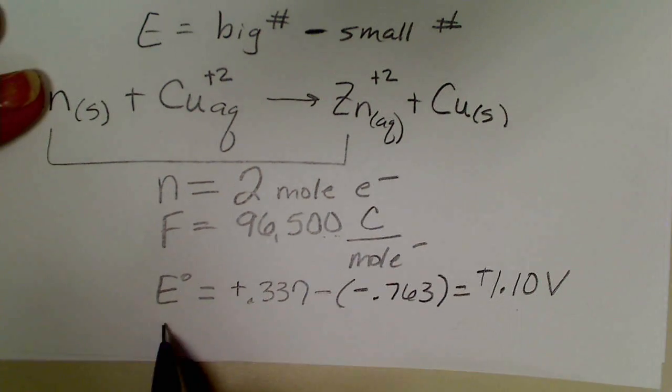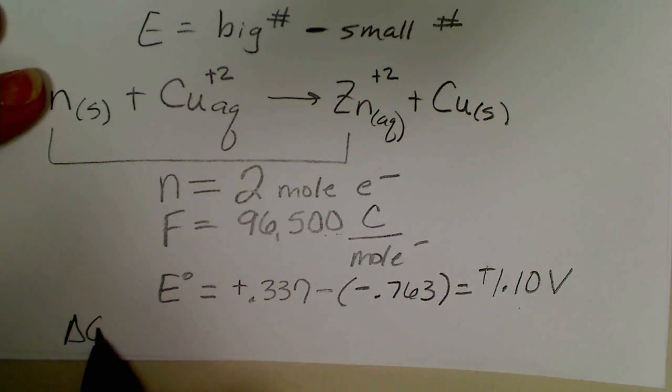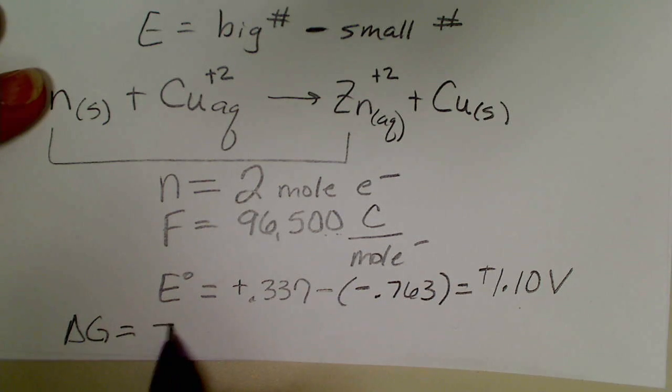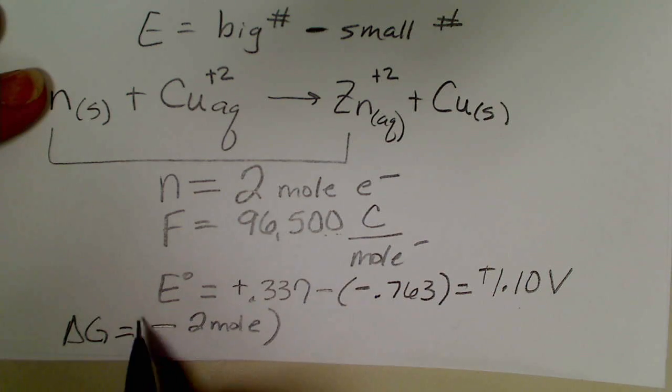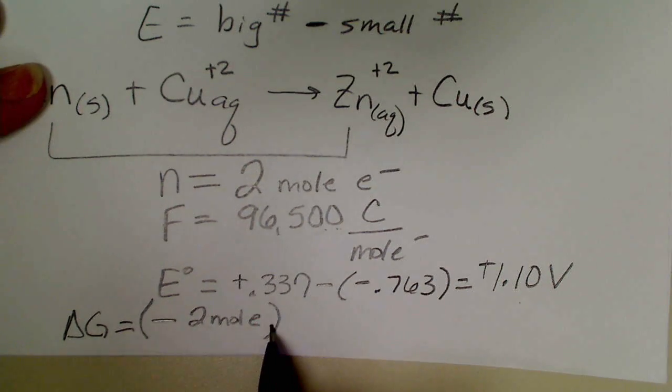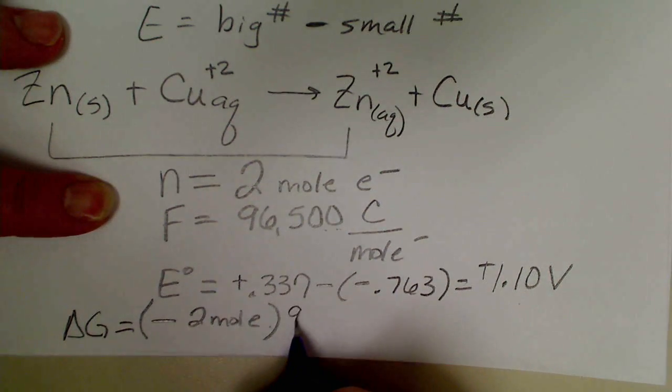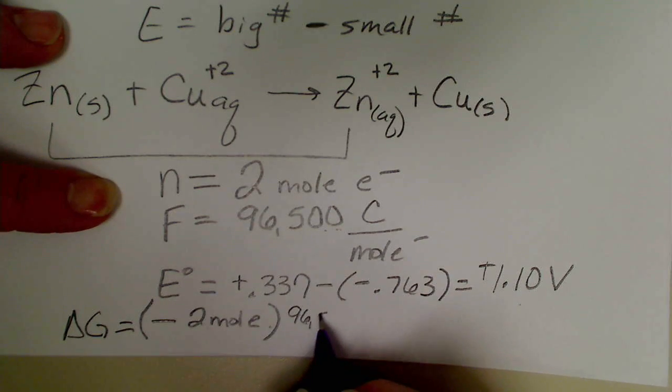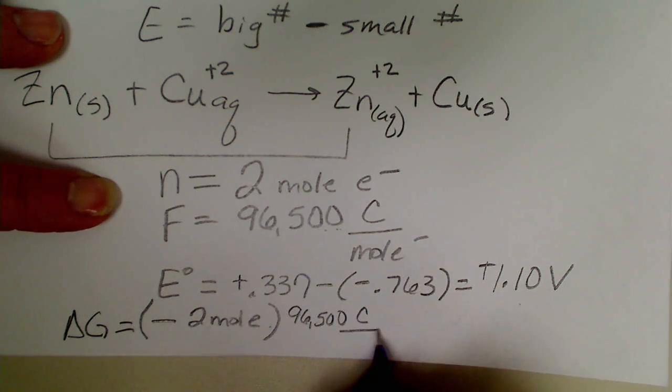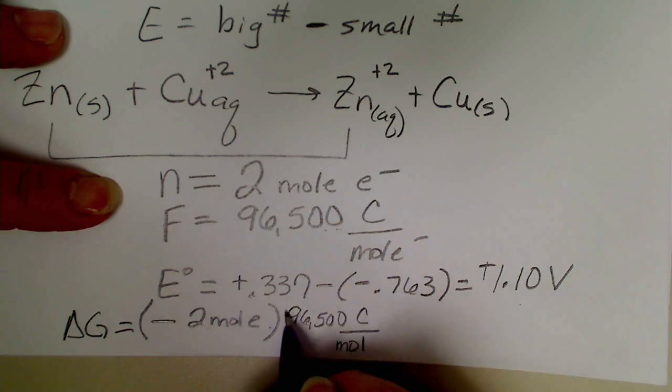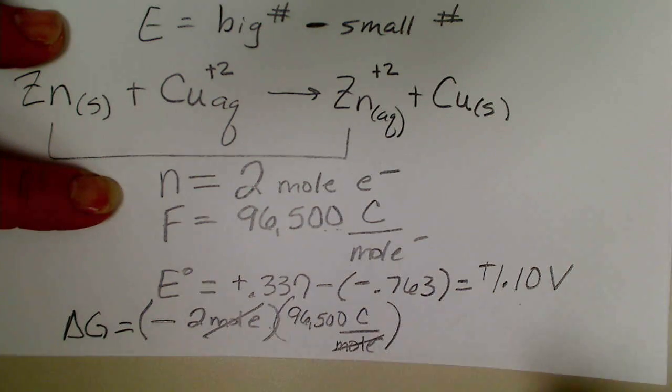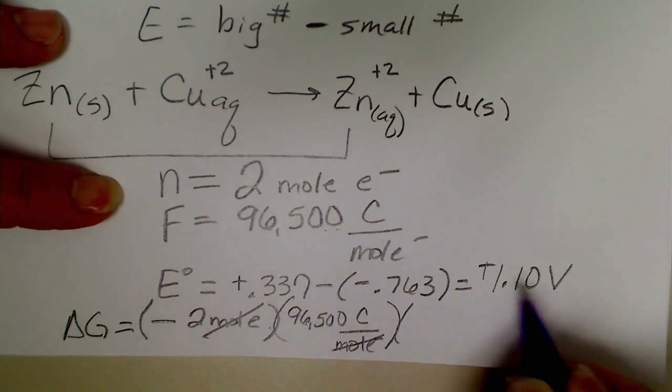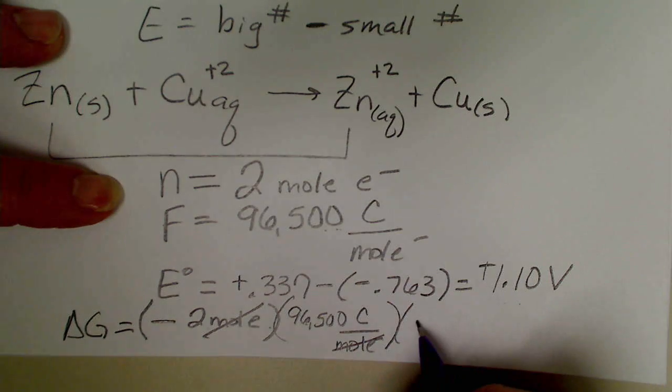Copper going to copper plus 2 gives us a value of 0.337 volts, and zinc's reduction potential is negative 0.763. When we calculate that potential, the big number 0.337 minus a negative 0.763, that is going to give us a positive potential of 1.10 volts.